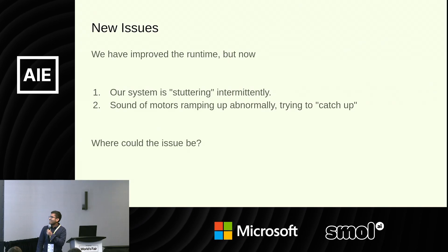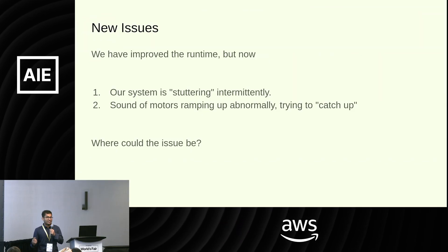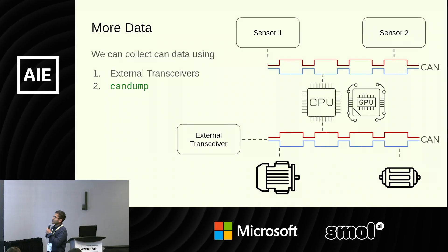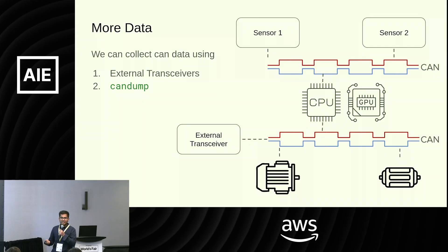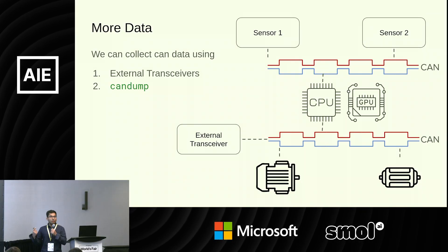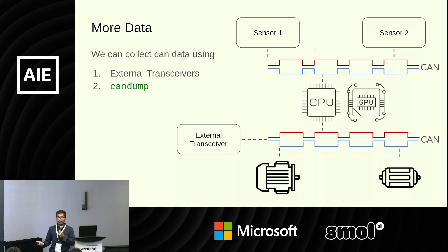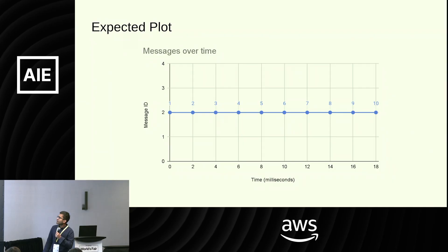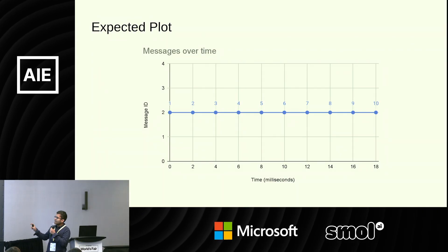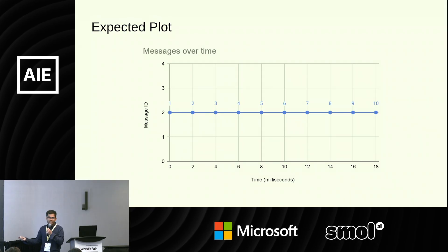We deploy the system on the robot and now see new problems. Our system is stuttering — our actuators are making sounds like catching up, or we're seeing weird motions on the actuator. This has to be policy; there's no way this can be software. Let's investigate more and get some data from the CAN bus. We get an external transceiver — very cheap, very open source — connect it to the CAN bus, and feed the data to a host computer like a laptop. We can run utilities like CAN dump, which gives you timestamped data of what message was seen at what time. Once we get this raw data, we can start plotting. Every two milliseconds we should have a message on the bus being sent out, very nicely spaced, reaching the actuators in time.